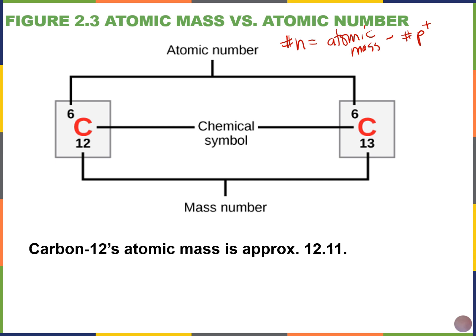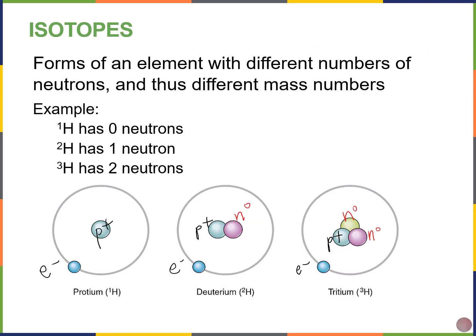If I look at the actual atomic mass of carbon, it's about 12.11 — not exactly 12 and not 13. This is because the average atomic mass of an element is calculated by looking at the masses of all of its isotopes as well as their relative abundance in nature. Isotopes are variations of an element that have a different number of neutrons. Looking at the pictures here: protium has no neutrons, deuterium has one neutron, and tritium has two neutrons. There are both stable and unstable isotopes — the greater the difference between the number of protons and neutrons, the more likely the isotope will be unstable.